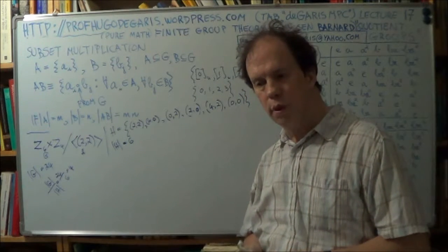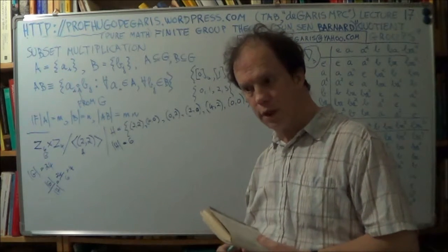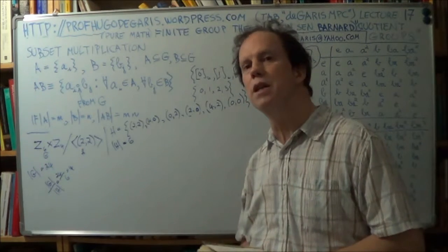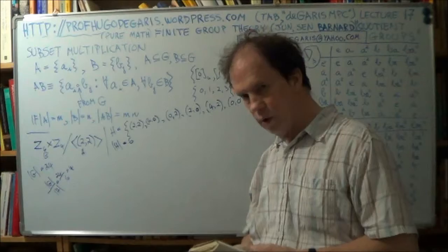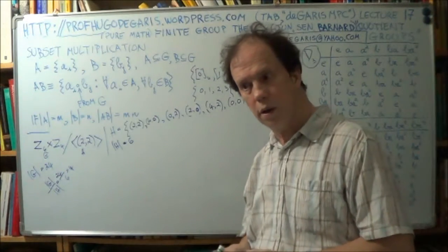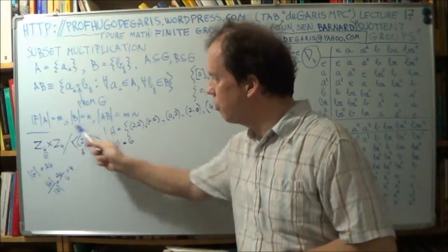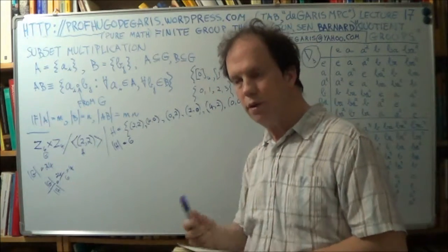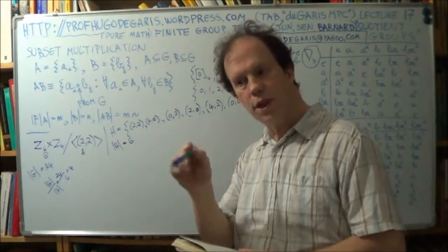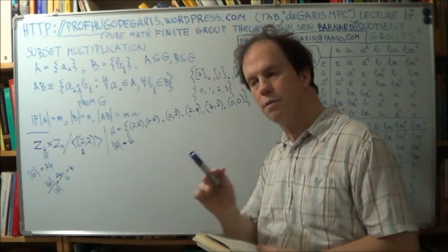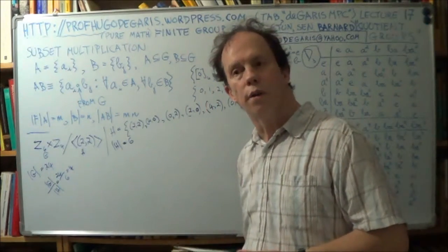And a group of order four is, there are only two types, two non-isomorphic types. Right? Now there's always a cyclic group, so it'll be C4. And the other only possibility for a group of order four, I think from memory, is C2 times C2. Right? So this quotient group will be isomorphic either to C4, you know, the cyclic group of order four, or isomorphic to C2 times C2. You only have two choices, because there are only two types of groups of order four. Right?